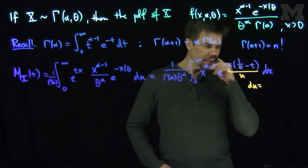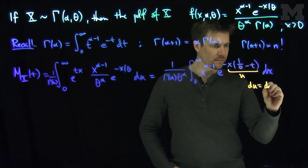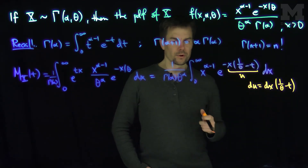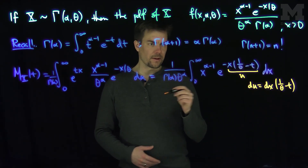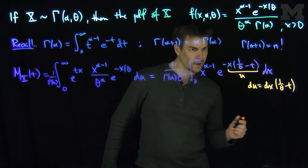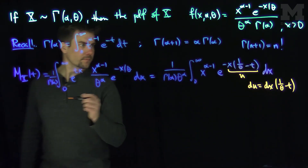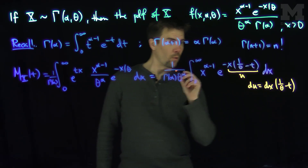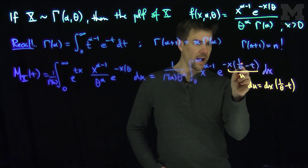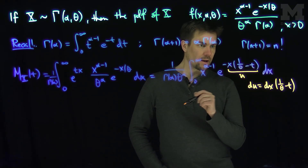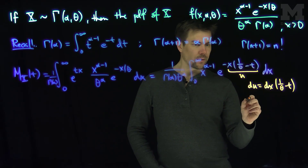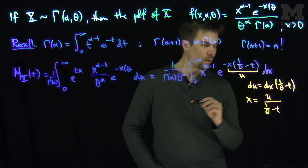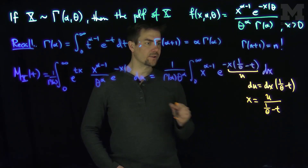The substitution we're going to make is: let u equal x times the quantity one over theta minus t. Then du equals dx times one over theta minus t. So if u equals x times one over theta minus t, then x equals u over the quantity one over theta minus t. That's what my x is in terms of u.